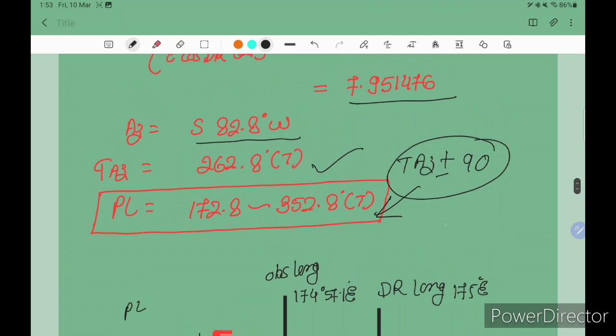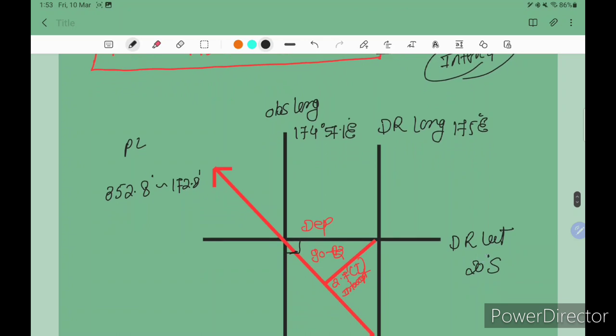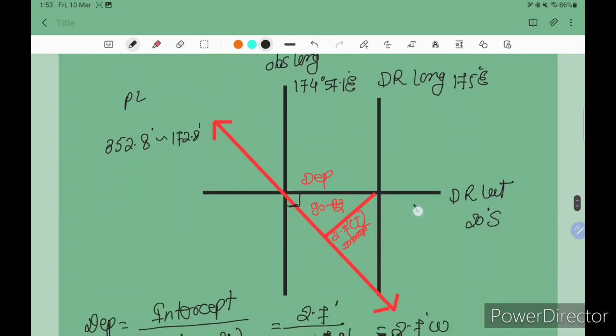Till here it is the intercept method, which you can easily solve. Now we are going to Part B. For Part B, we make a PL diagram. What we have: we have DR latitude and DR longitude. Now we have azimuth 262.8 degrees.